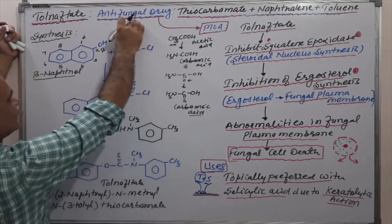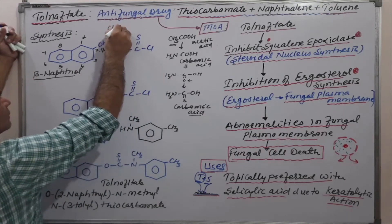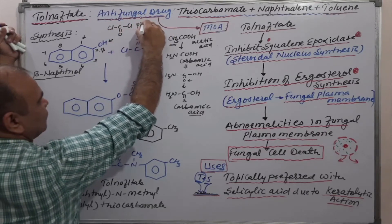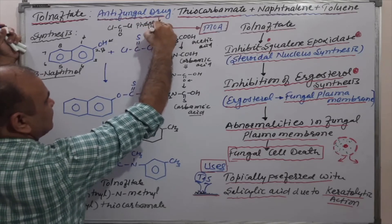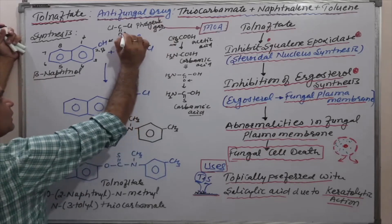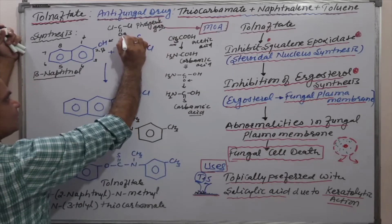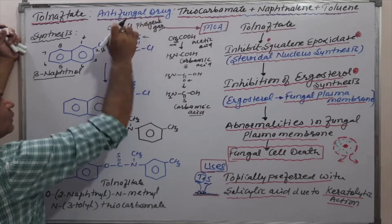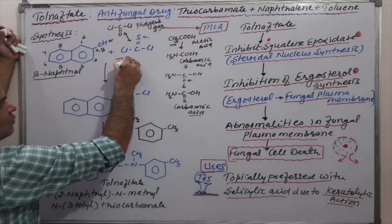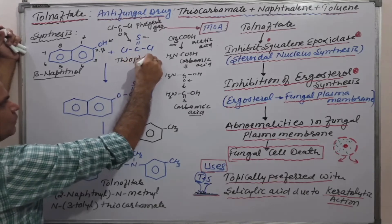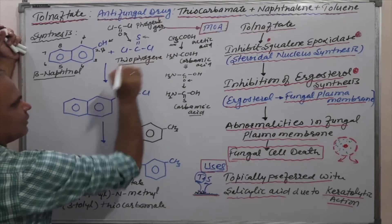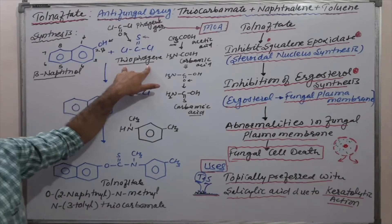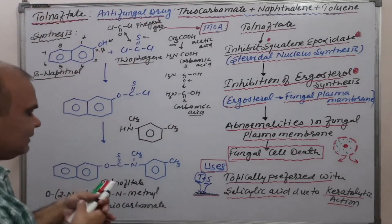Another molecule to understand: chlorine — carbon — oxygen — chlorine is phosgene gas. Comparing phosgene and the sulfur analog, the only difference is sulfur replacing oxygen, giving us thiophosgene (Cl — C(=S) — Cl). So beta-naphthol and thiophosgene are the starting materials for tolnaftate, and the first reaction is a simple condensation reaction with removal of HCl.